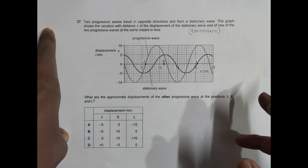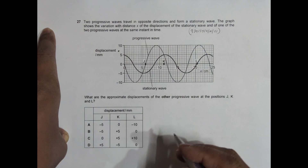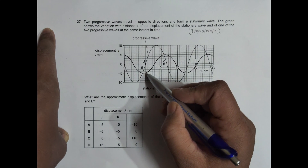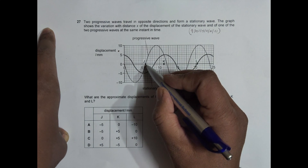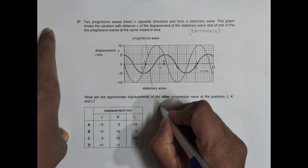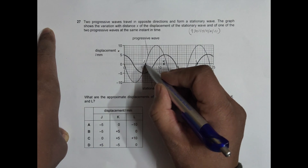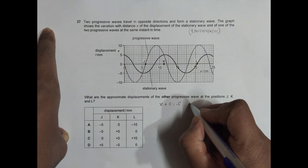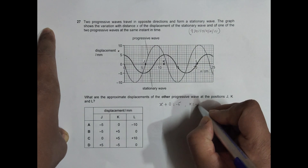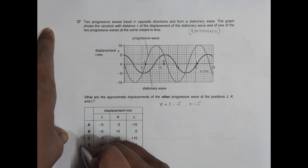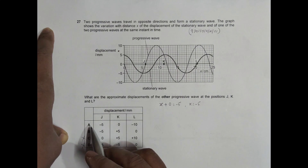At point J, the resultant displacement is minus 5, and the displacement of this shown progressive wave is 0. So if X is the displacement of the other wave, then X plus 0 equals minus 5, which means X equals minus 5. That means two of the answer choices are disqualified right away, and the only remaining choices are A and B.